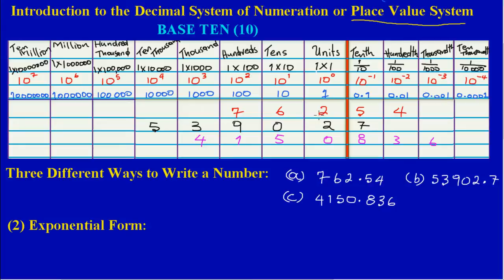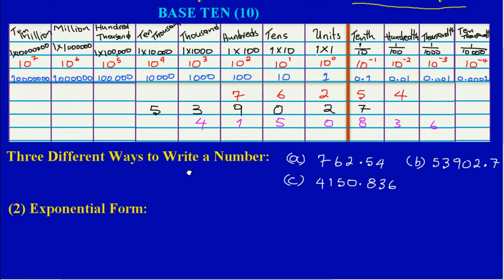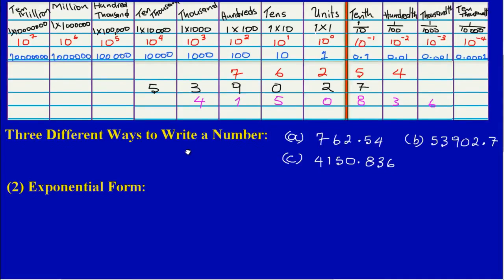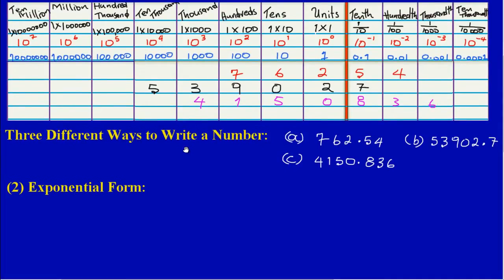That's the form we are going to be writing these same numbers in. Take part A. In part A, the number is 762.54, and now we're going to write that number in exponential form.